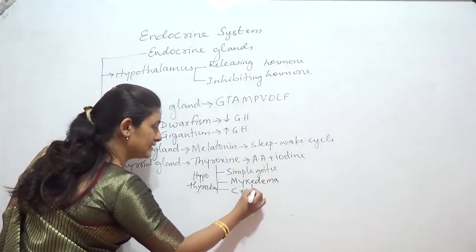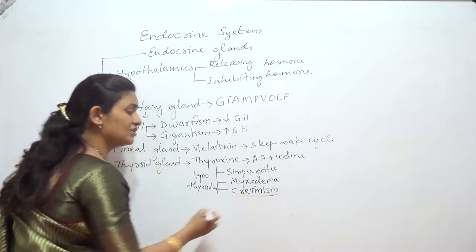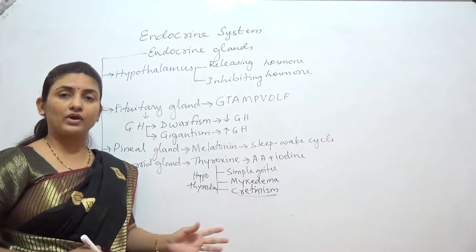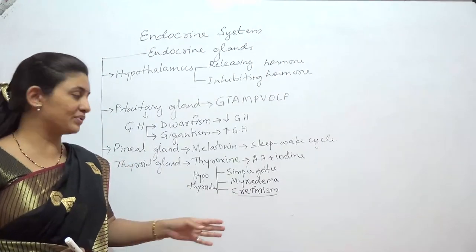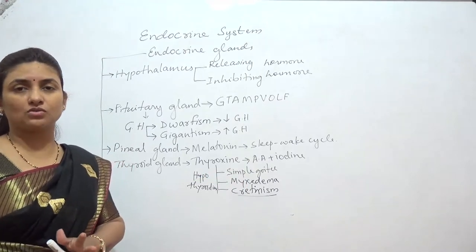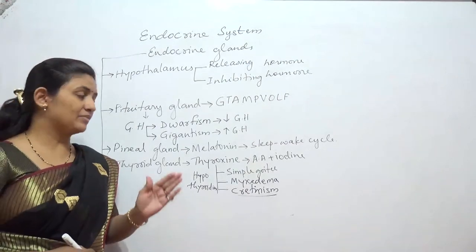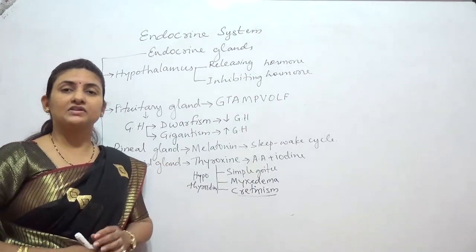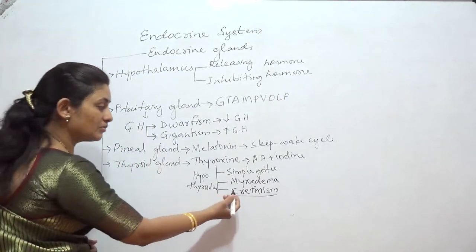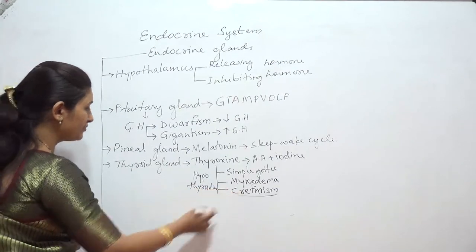Then we came across cretinism. This condition is especially seen in children where improper function of the thyroid gland right from birth leads to the child not developing properly. Physical and mental development of the child becomes retarded, and further symptoms include defective teeth, bow legs, and loose skin.